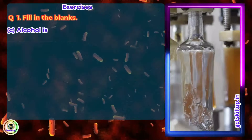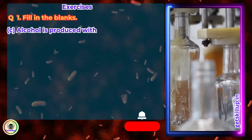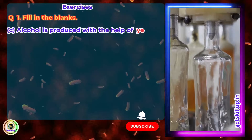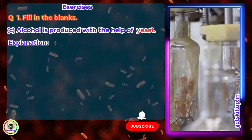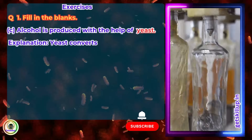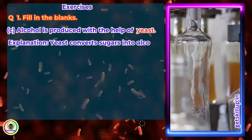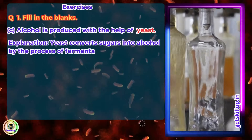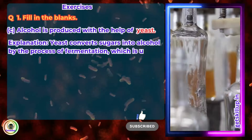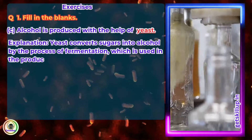Alcohol is produced with the help of yeast. Yeast converts sugar into alcohol by the process of fermentation, which is used in the production of alcoholic beverages.